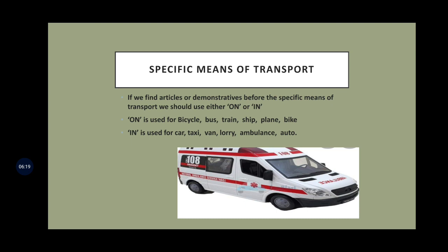If we find any determiner before the specific means of transport, we should use either on or in. On is used for bicycle, bus, train, ship, plane, and bike. In is used for car, taxi, van, lorry, ambulance, and auto. You should remember these children.